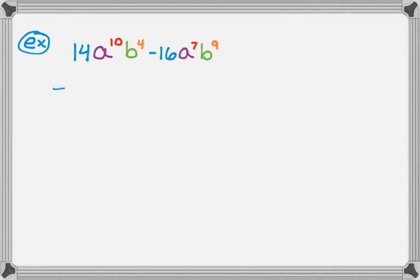The first thing I'm going to do is deal with the numbers — 14 and negative 16. The greatest common factor there is 2, so I'm going to take out a 2. Now I move on to the a's: I have a to the 10th and a to the 7th. When you're factoring, you always take the lowest power you see, so that would be a to the 7th. Moving on to the b's — b to the 4th and b to the 9th — I take out the lowest power, which is b to the 4th.